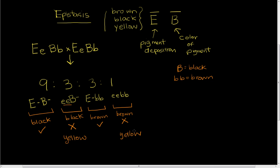So when we look at the phenotypic ratios, two of these groups — the 3 with little e big B and the 1 doubly recessive — exhibit the same yellow phenotype. That's why we only have three phenotypic classes in this epistasis relationship: nine black individuals, three brown individuals, and four yellow individuals (three plus one).